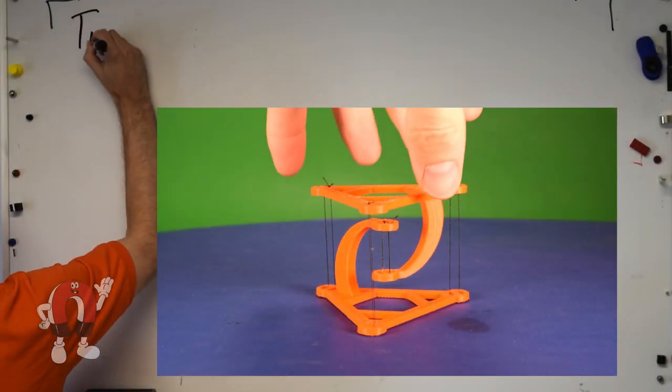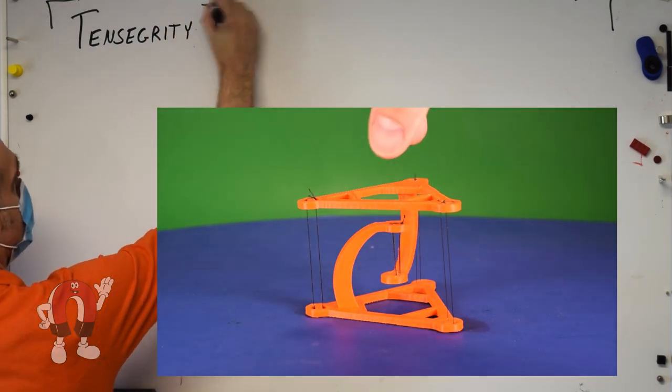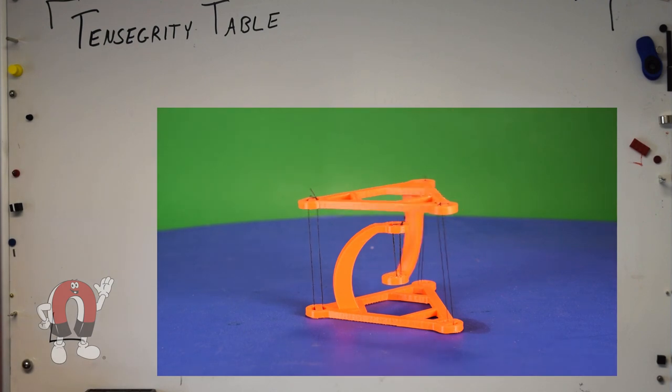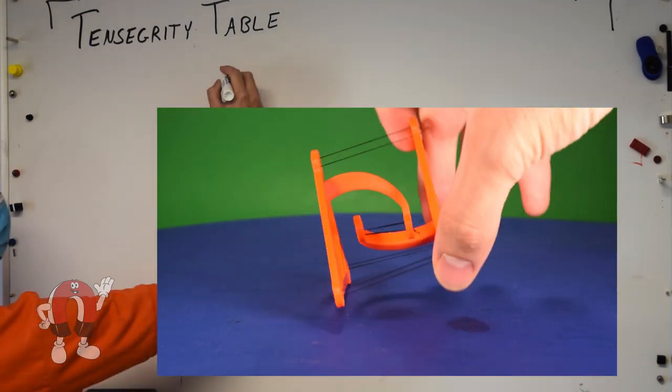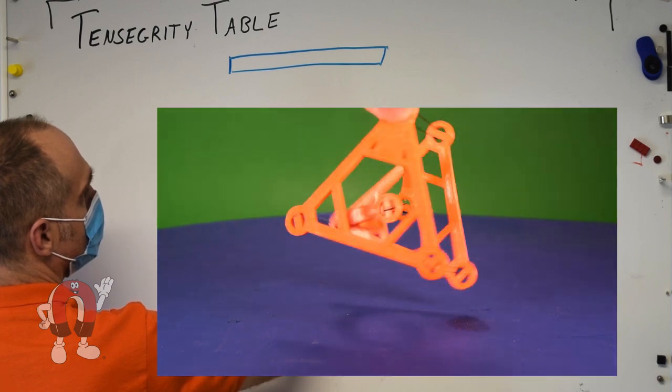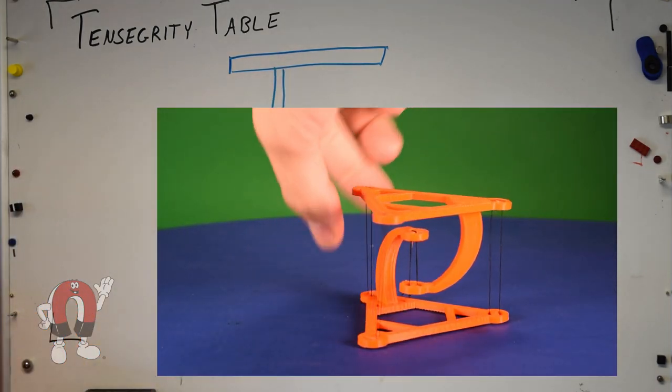We're going to examine the forces in a tensegrity table and try and figure out why replacing the strings with magnets won't work. Let's start with the little table, where strings hold the two halves of the table together. It's interesting because you don't expect a string to hold a weight in compression, trying to squish it together. Strings only hold loads in tension. So how does this work?